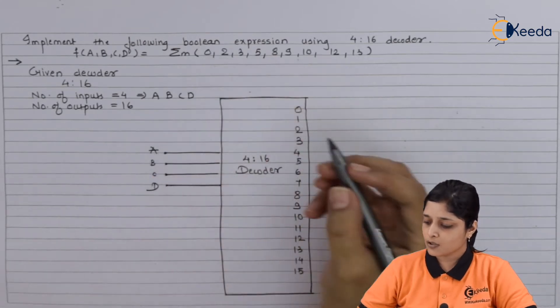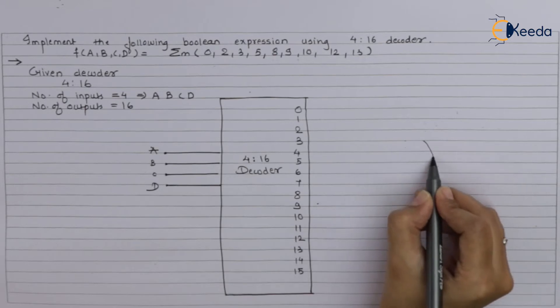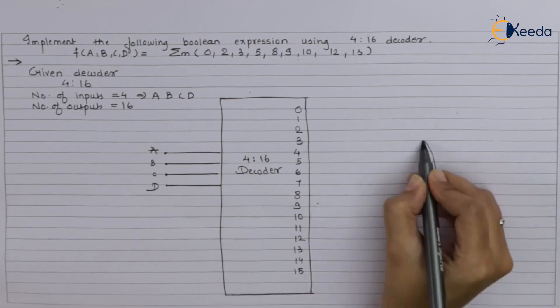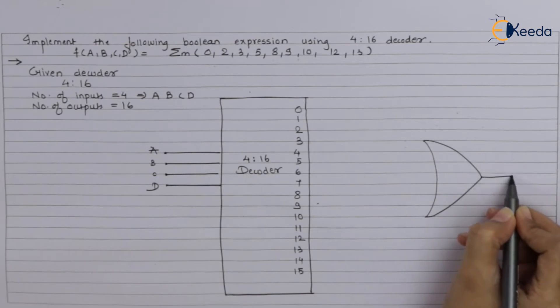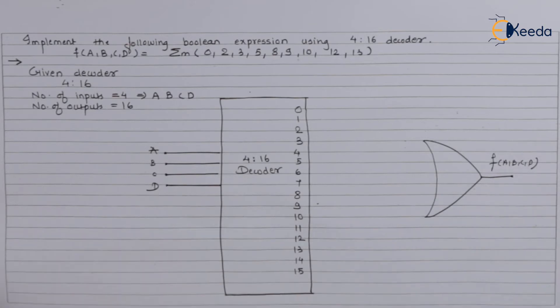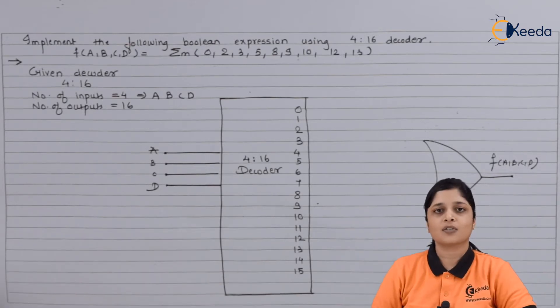So we will focus on zero term. We will draw here first of all OR gate for first function. This is your OR gate f(a,b,c,d). Now your aim is to connect all the minterms present in the given expression to the OR gate.